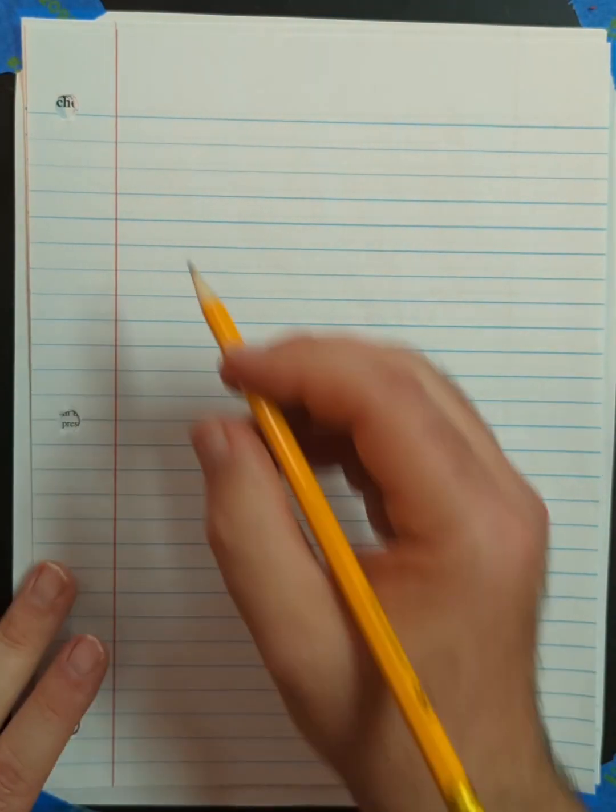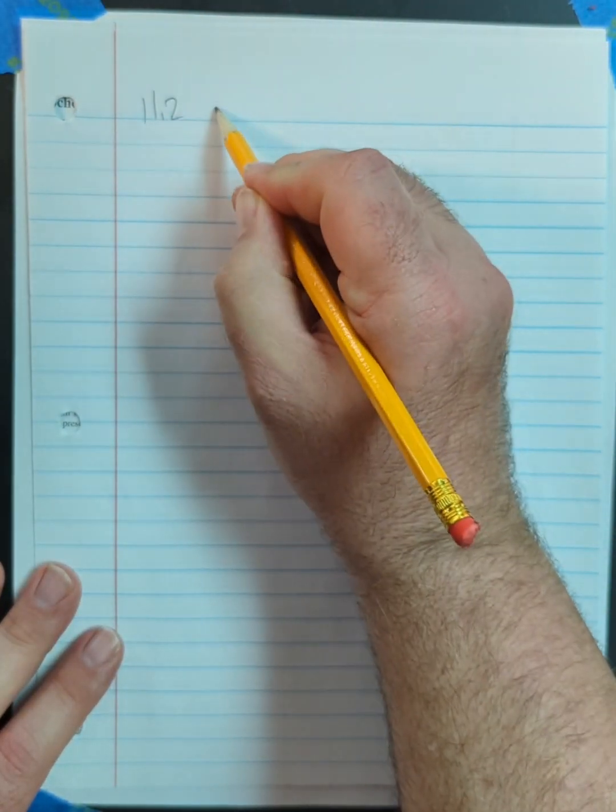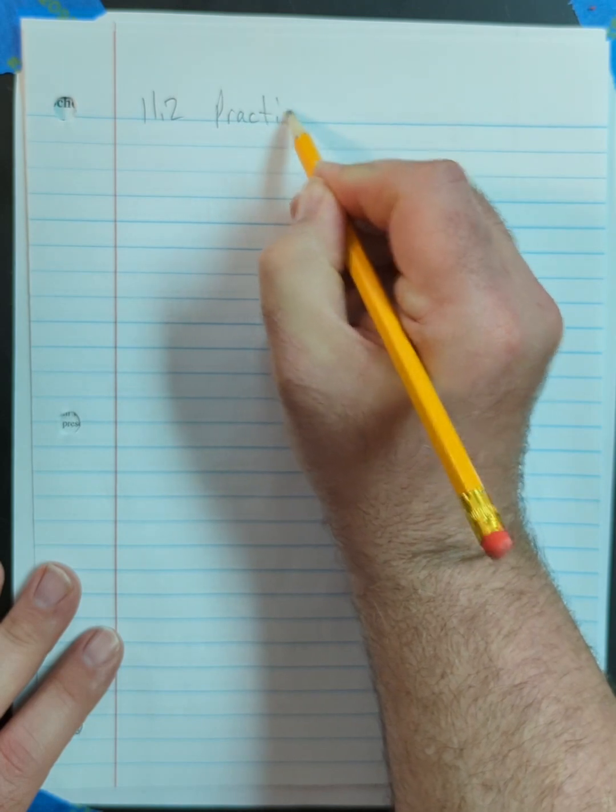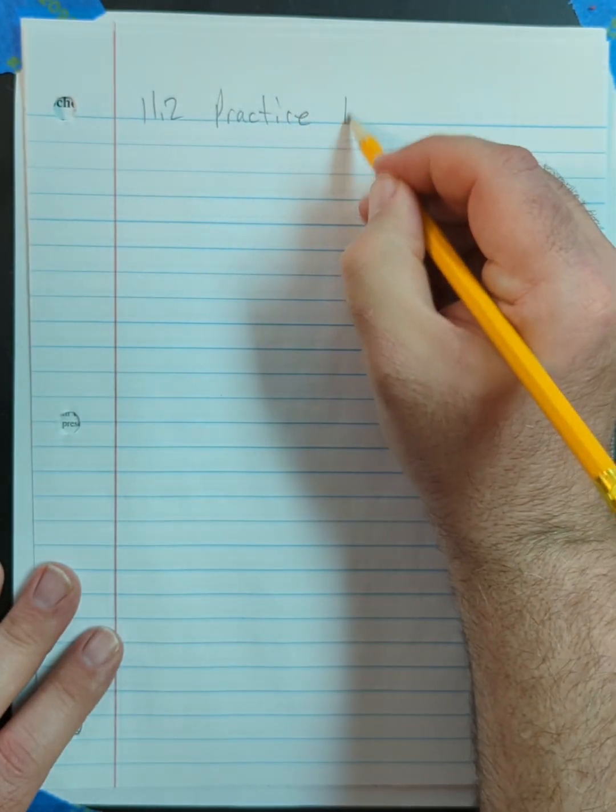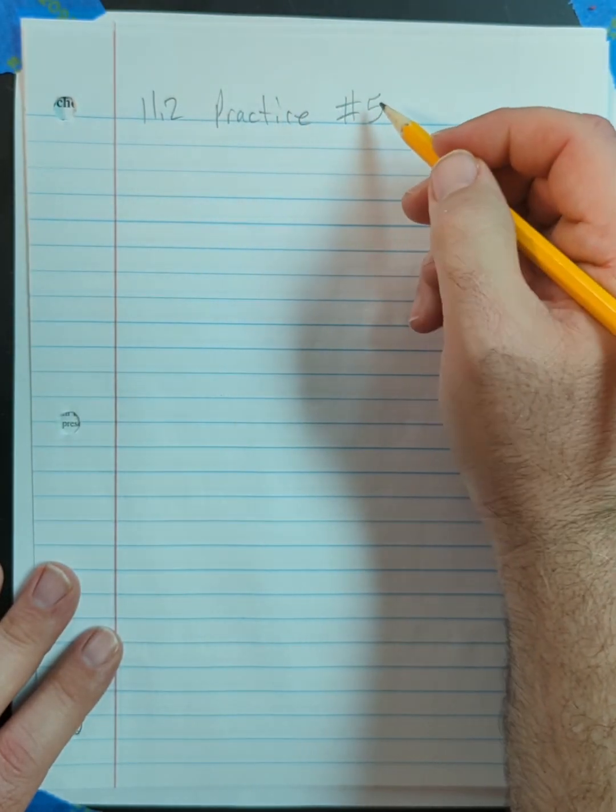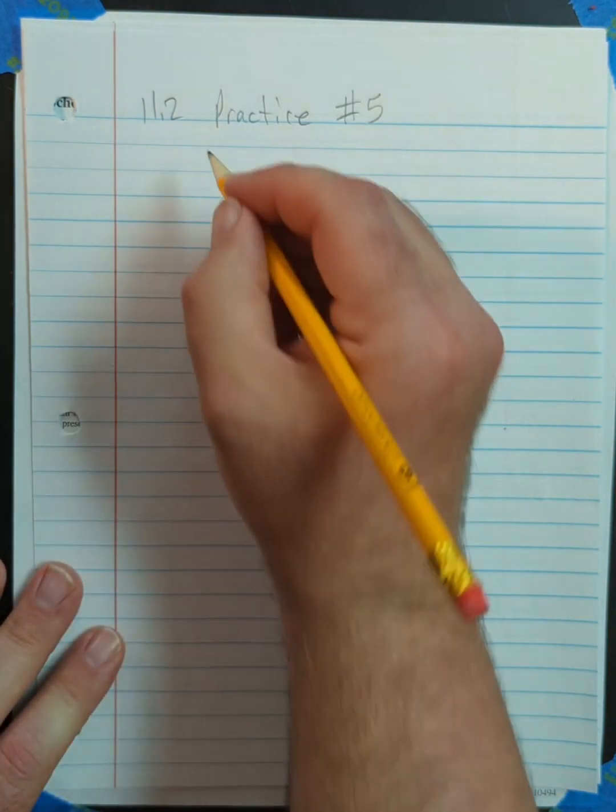All right, so now we have 11.2 practice problem number five. And number five is double replacement.